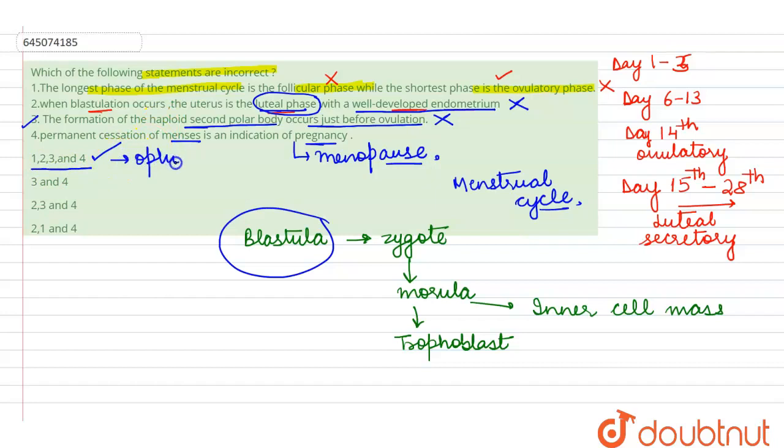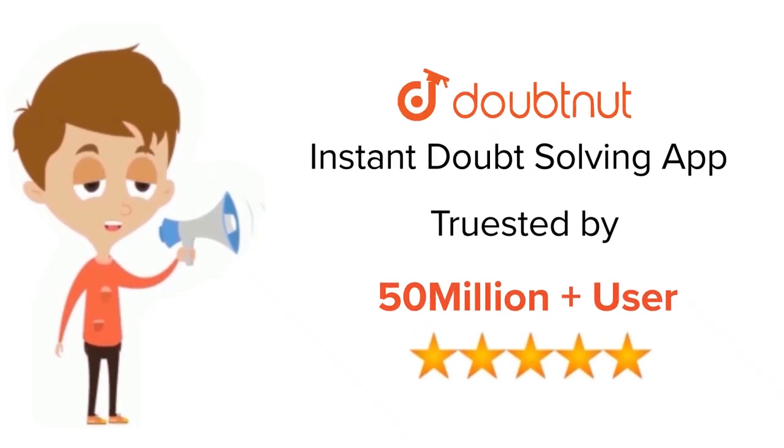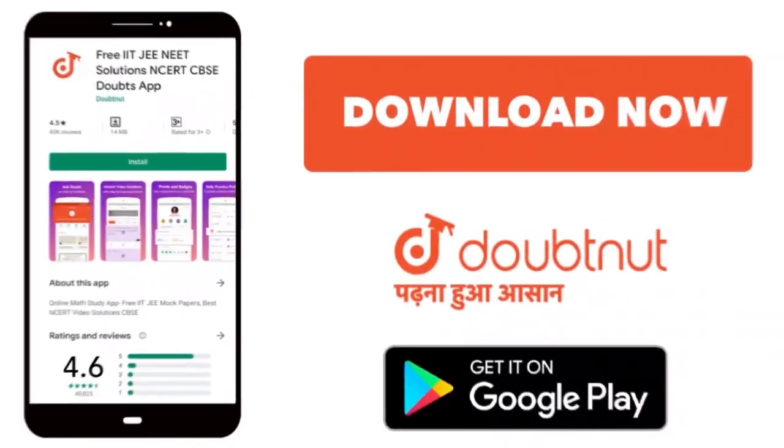That is option number one can be marked as a correct answer, whereas the other options which are given here are the wrong ones. So this is all about this query. Thank you. For class 6 to 12, JEE and NEET level, trusted by more than 5 crore students. Download Doubtnet today.